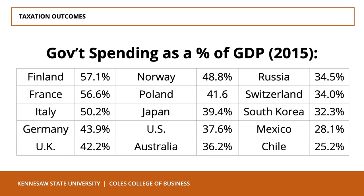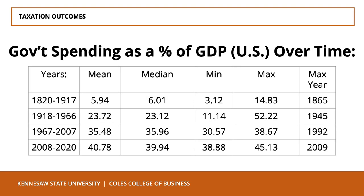Today, governments spend large sums of money. While the US federal government spent almost five and a half times as much as the government of the UK last year, the US government actually spends less as a percentage of GDP than the UK. This is due in part to the fact that the US economy was almost eight times larger than the UK economy. Over time, the US government's spending as a percentage of GDP has increased, with the most significant increases occurring in the 20th century.